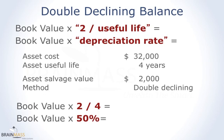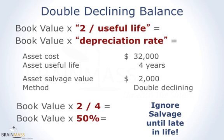Here we have an asset with a $32,000 cost, expected to last four years, with a salvage value of $2,000. Notice that salvage does not appear in the formula — book value is simply cost minus accumulated depreciation, with no salvage included. You ignore salvage until very late in the asset's life; you stop depreciating only when you reach salvage value. This is a common misconception: for straight line you use salvage, but for double declining balance you ignore it until the last year of the asset's life.